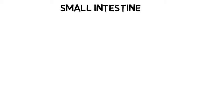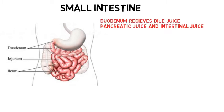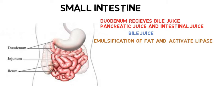Let us move towards the small intestine. The small intestine receives bile juice from the liver, pancreatic juice from the pancreas, and intestinal juice, also called succus entericus.